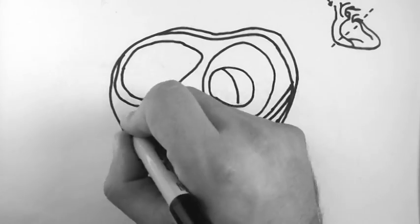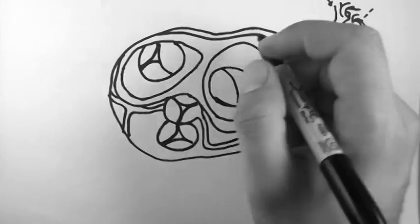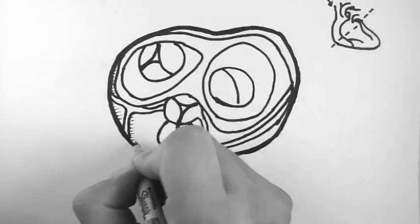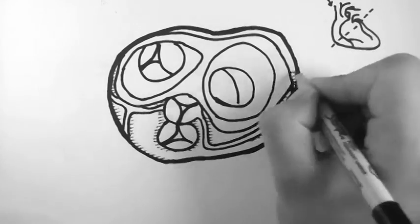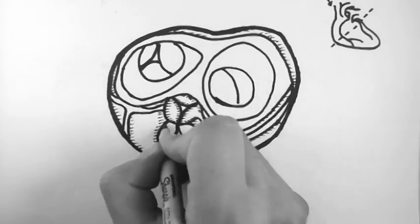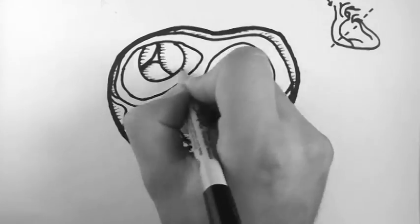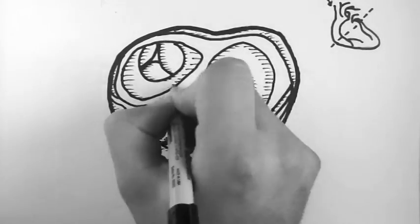Now just note that the left is on the right and the right is on the left. And I've done this to match up with the previous video on the anatomy of the heart in which we looked at the heart from the anterior aspect.